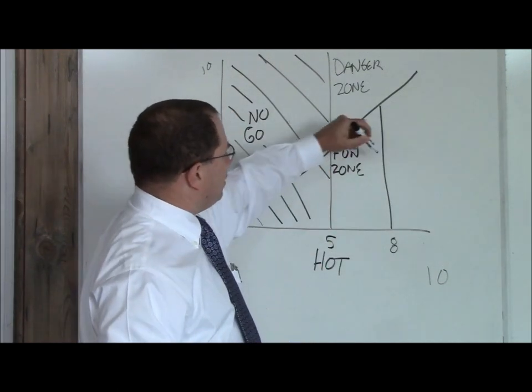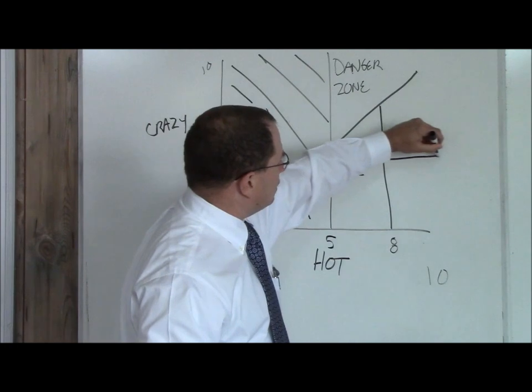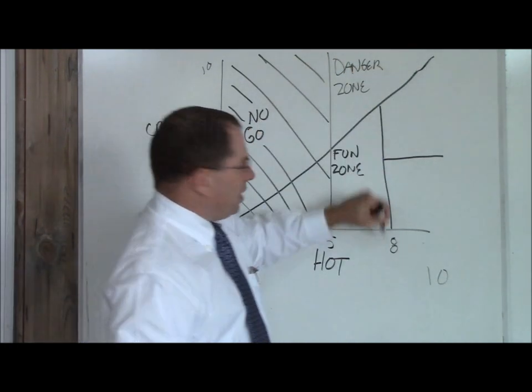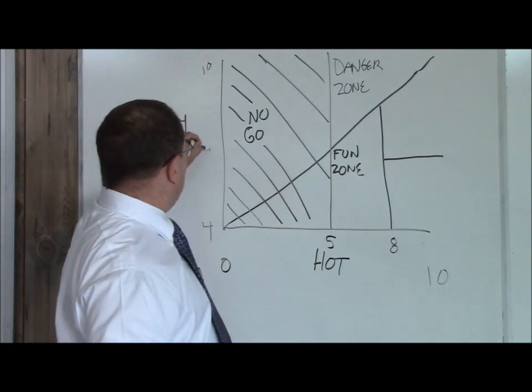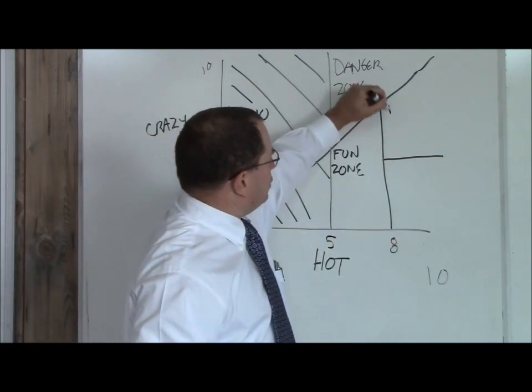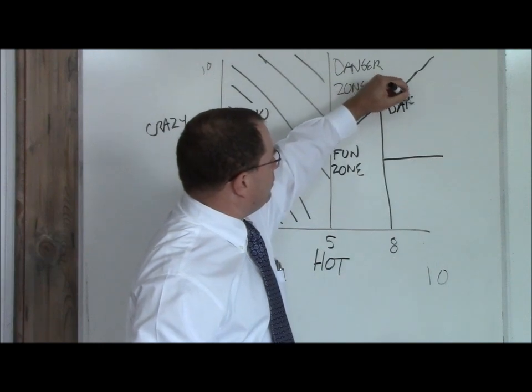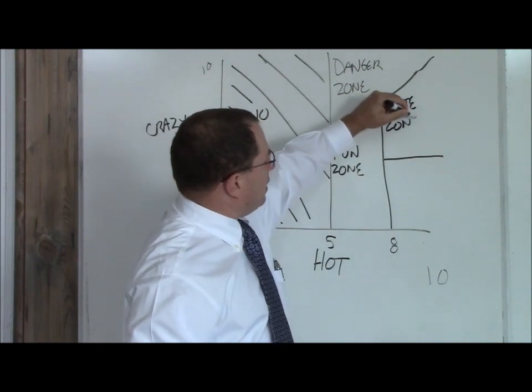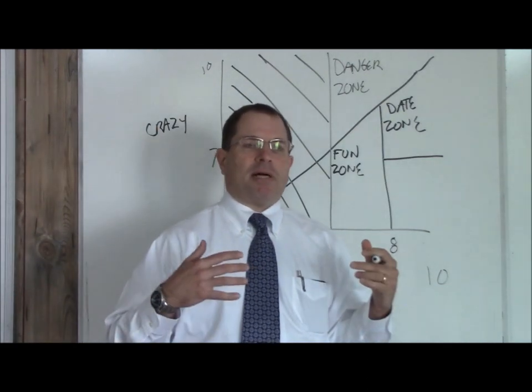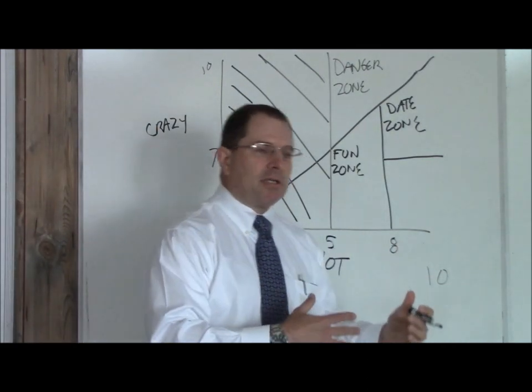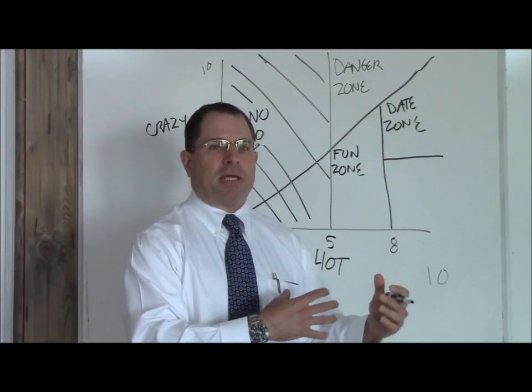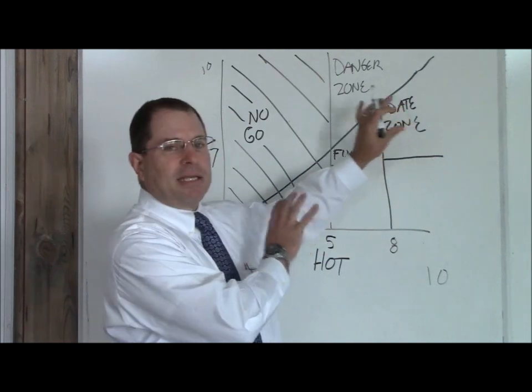Now, moving on, you have this zone here. This is below the crazy line, above an eight hot, but still about a seven crazy. This is your date zone. You can stay in the date zone indefinitely. These are women that you introduce to your friends and your family. They're good looking and they're reasonably not crazy most of the time. So you can stay here indefinitely.